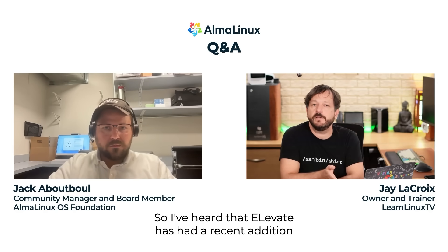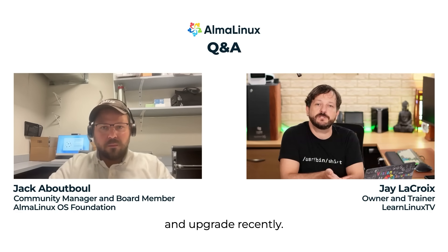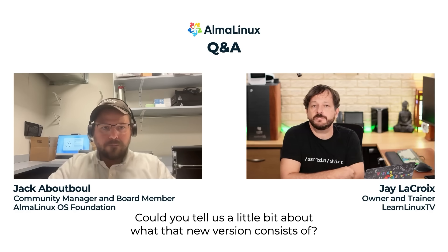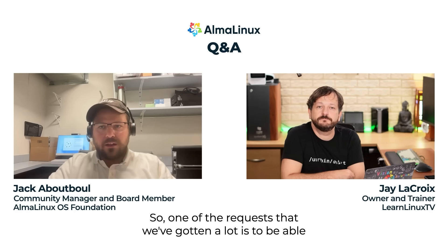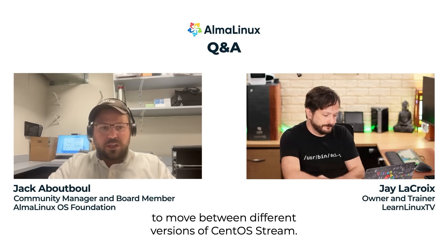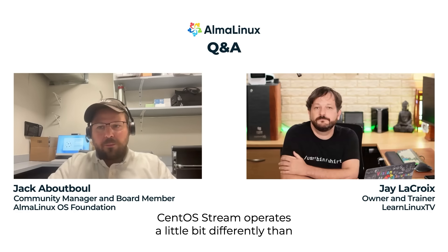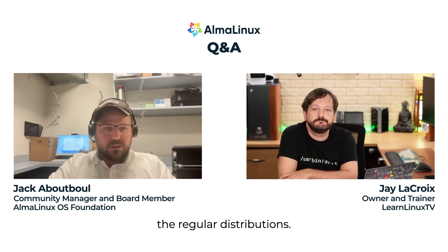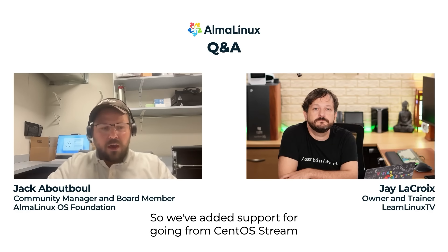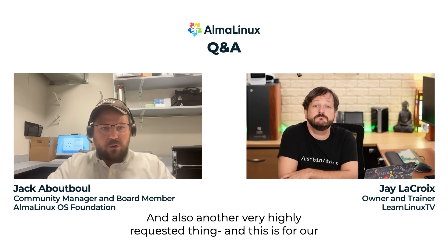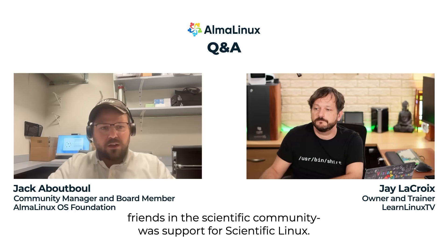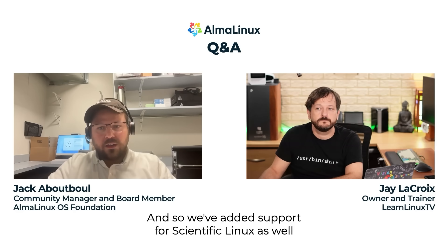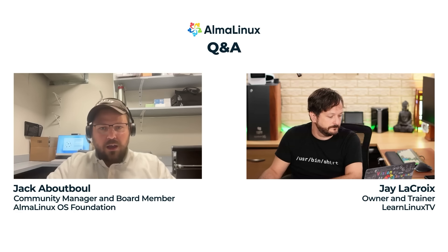I've heard that Elevate has had a recent addition and upgrade. Could you tell us a little bit about what that new version consists of? Absolutely. One of the requests that we've gotten a lot is to be able to move between different versions of CentOS Stream. CentOS Stream operates a little bit differently than the regular distribution, so we've added support for going from CentOS Stream 8 to CentOS Stream 9. Also, another highly requested thing — and this is for our friends in the scientific community — was support for Scientific Linux, so we've added support for that as well to enable those users to migrate.